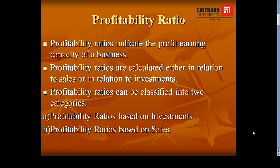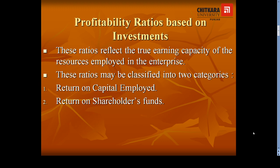Profitability ratios can be classified into two categories: first, profitability ratios based on investment, and second, profitability ratios based on sales. Profitability ratios based on investments tell us how much profits or returns a business has generated upon their investments or capital employed in the business. These ratios reflect the true earning capacity of the resources employed in the enterprise. They can be further categorized into return on capital employed and return on shareholders funds.